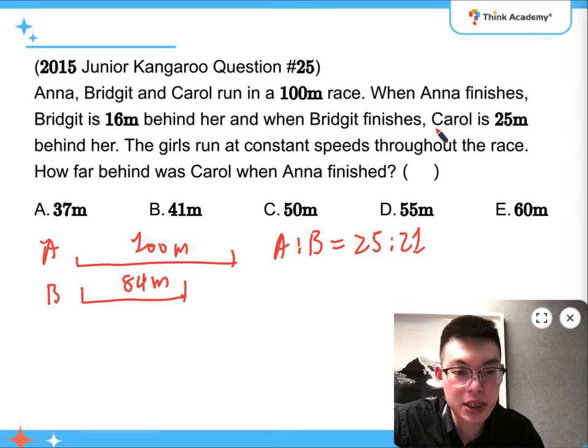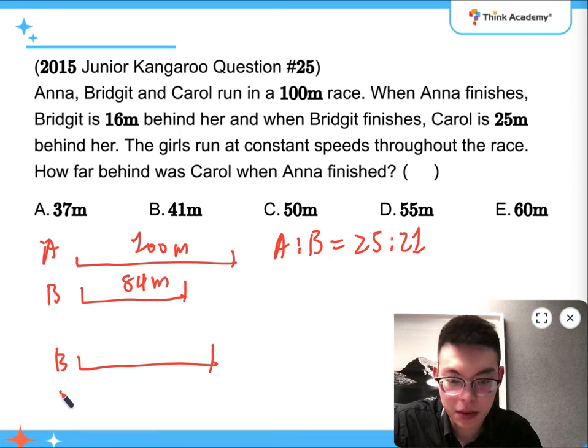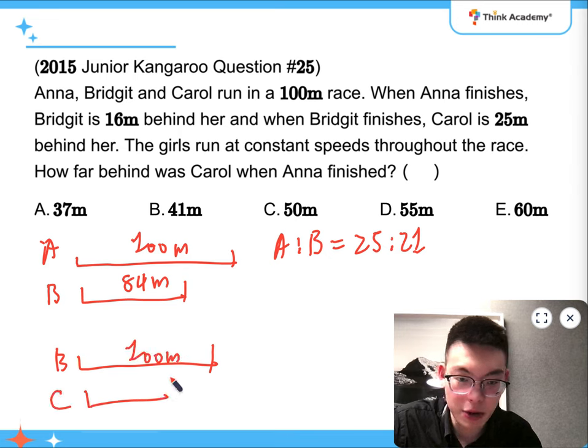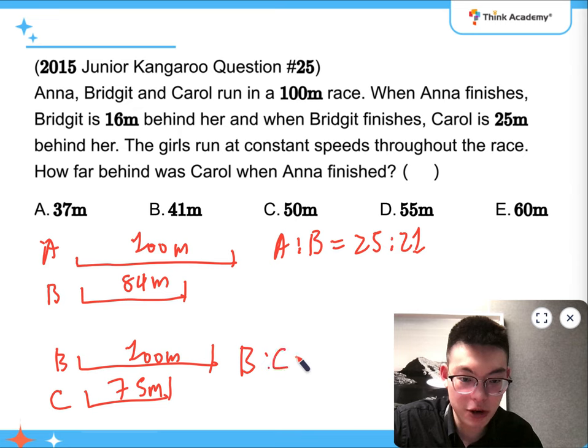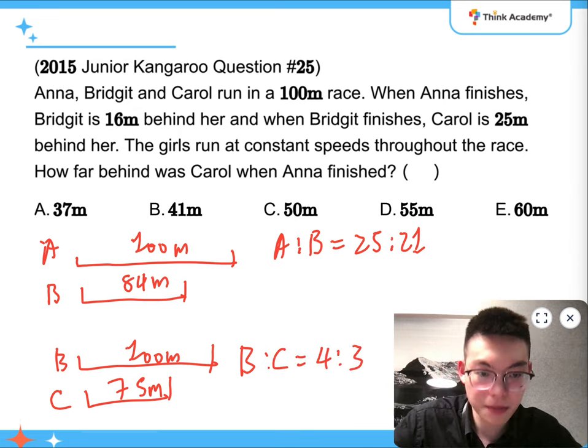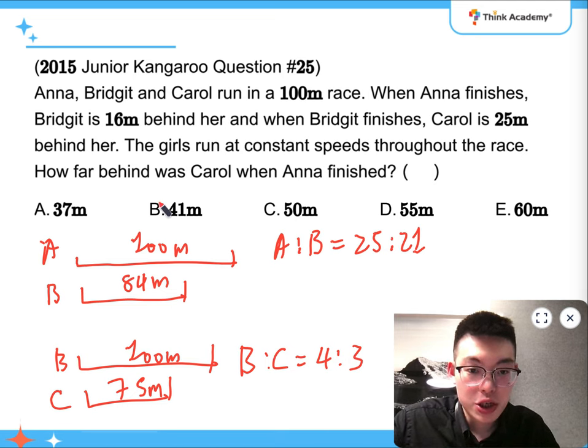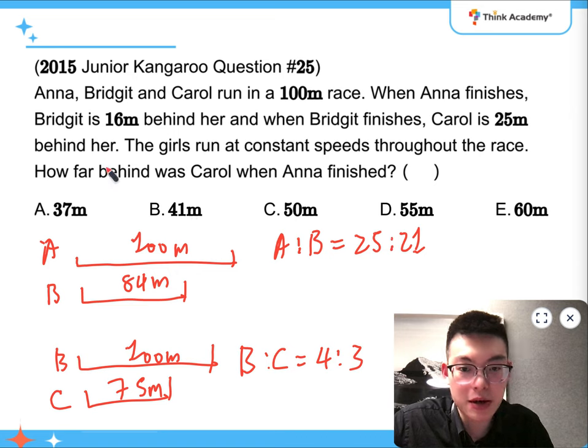And when Bridget finishes, Carol is twenty-five meters behind her, which means that when Bridget is at a hundred meters, Carol is at seventy-five meters. So it means that Bridget to Carol is four to three. The girls run at constant speeds throughout the race. How far behind was Carol when Anna finishes?